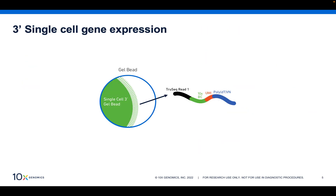If you take a closer look at the gel beads, you see that they consist of single-stranded oligos that have a couple of key features. First, they contain a 10x barcode for cell calling. These barcodes allow us to group reads that come from the same cell together. Second, a unique molecular identifier, or UMI, to help with PCR duplication. And finally, a poly-T tail to capture messenger RNA.